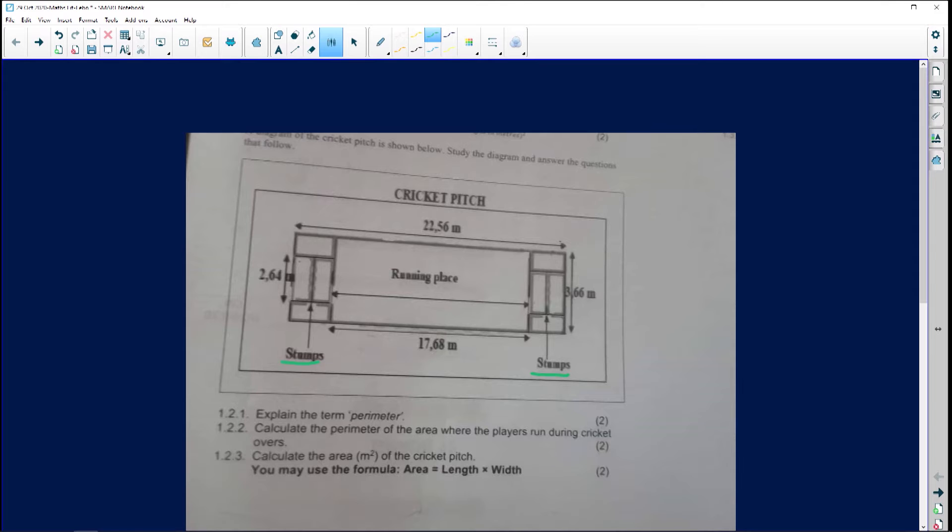It says to me this is the running area from here to here so already I know that's going to be my running area and that is 17.68 meters and then going up from here to there is going to be 3.66 meters. Let's go now and look at the questions that we are given in terms of this particular scenario.